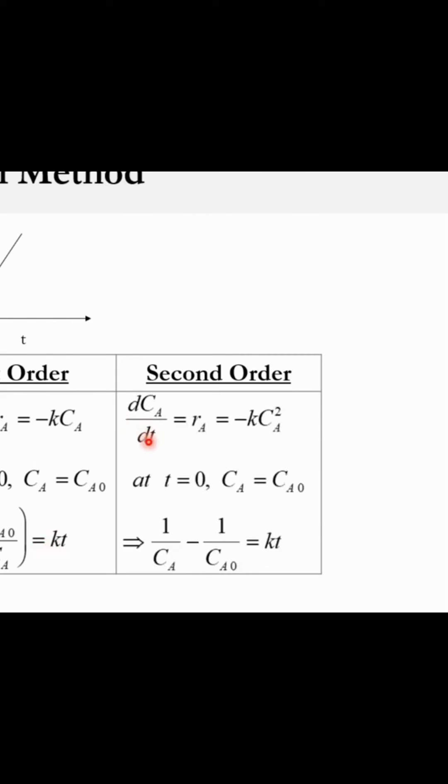For second order, dCa/dt = Ra = -kCa². Again with the same limits for integration, we get 1/Ca - 1/Ca0 = kt, or 1/Ca = 1/Ca0 + kt, where t is the x-axis, 1/Ca is the y-axis, and the slope is k.